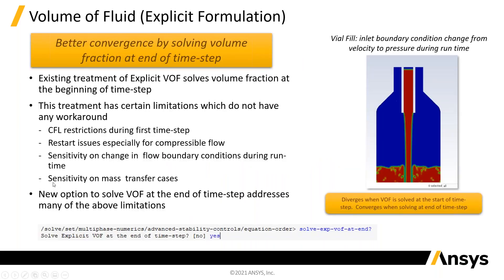On the explicit formulation, you're actually jumping forward in time explicitly — you take your conditions at the current time and step forward. If you step forward with a small enough time step, that's stable. It's probably Courant number limited to less than one, or a fraction of one, but there are certain cases that don't work very well and can be a bit of a problem.